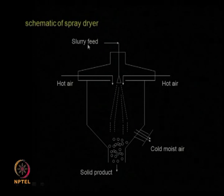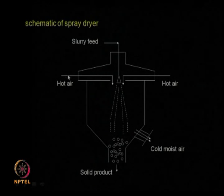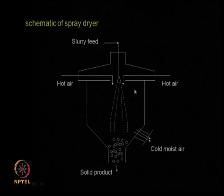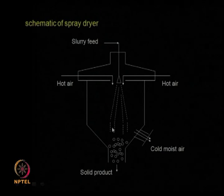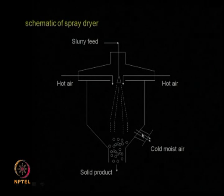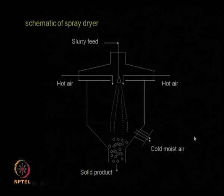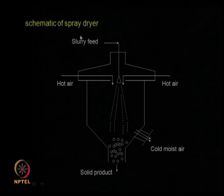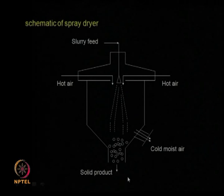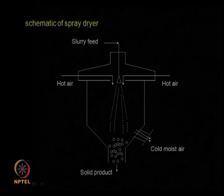In a typical spray dryer setup, slurry is fed from the top, comes out through a nozzle as a fine spray, and hot air comes in contact so the solvent or water gets evaporated. Fine micron-sized particles are formed and collected. The hot air becomes cooler and moisture-laden as it gives up heat. This can be done continuously — continuously feeding slurry, sending hot air, and removing solid product. This is a very good technique widely used in the food and flavoring industry.